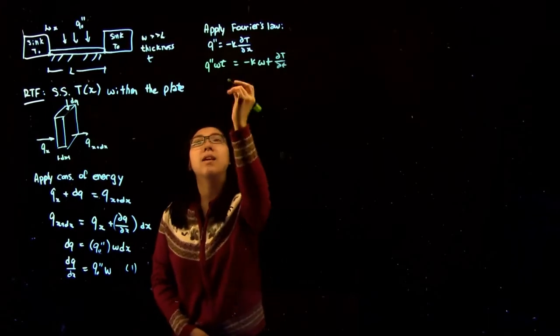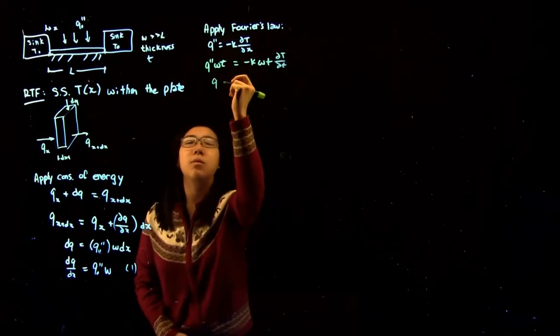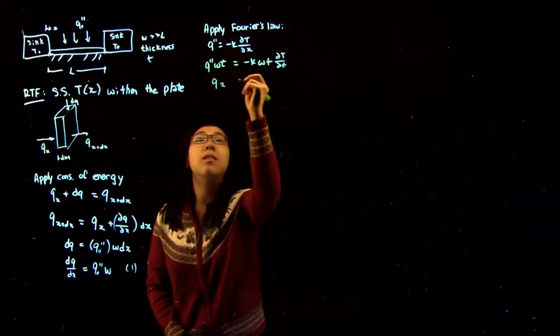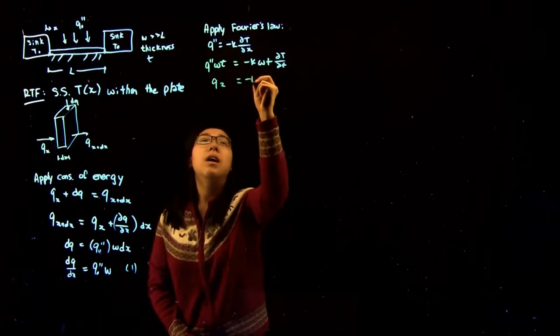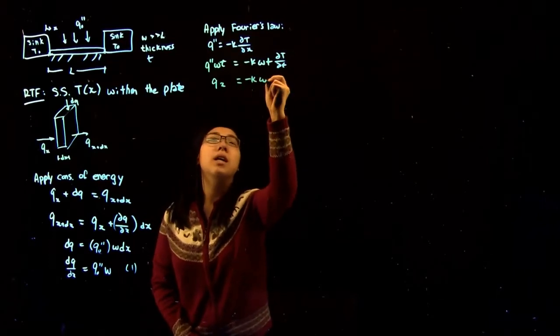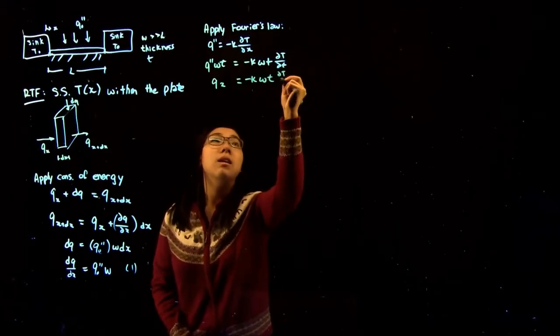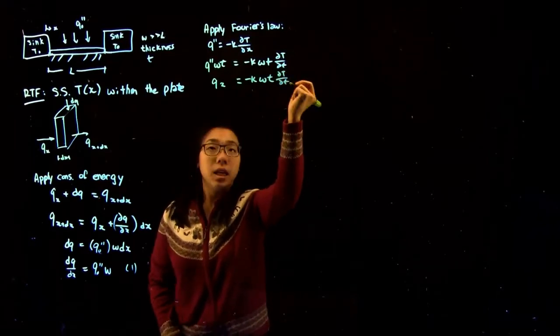The left side simplifies to give the value for Qx, equaling minus K Wt times dT/dx.